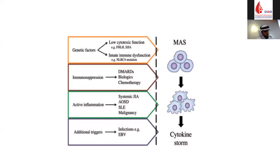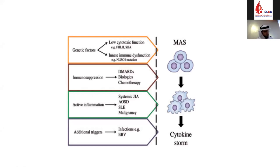Multiple factors contribute to MAS, including genetic factors related to innate or adaptive immunity. Immunosuppression used for rheumatic diseases — methotrexate, among DMARDs, has been reported to induce MAS — and among biologics, etanercept (TNF-alpha blocker) has been reported to induce MAS. Chemotherapy may induce HLH. Severe inflammatory processes may stimulate cytokine production, in addition to the well-known trigger of infections, especially Epstein-Barr virus.